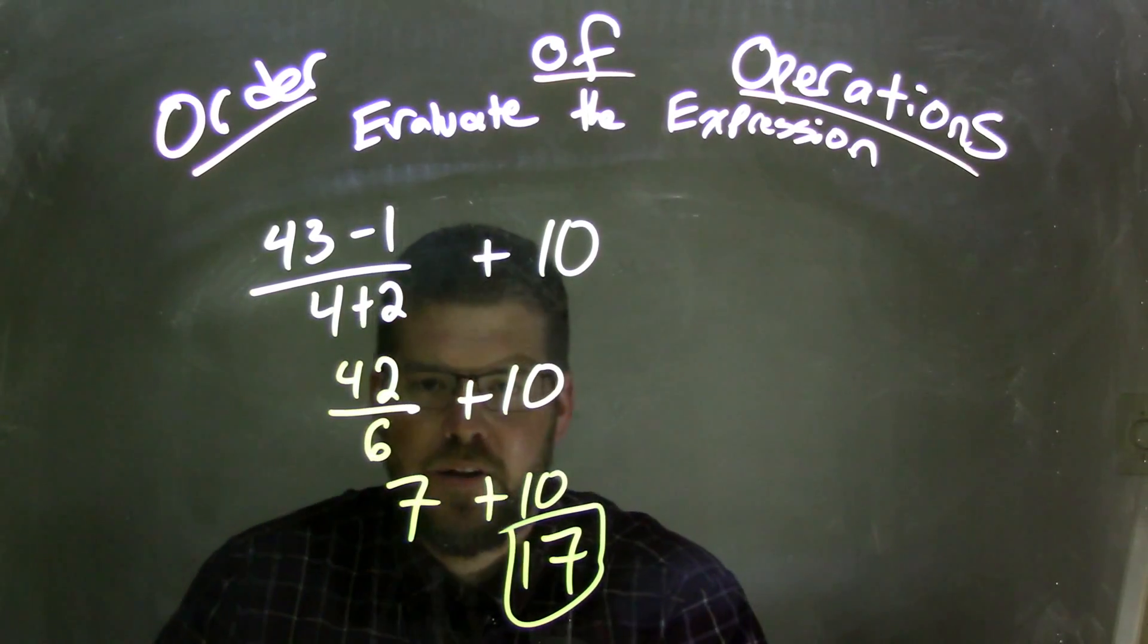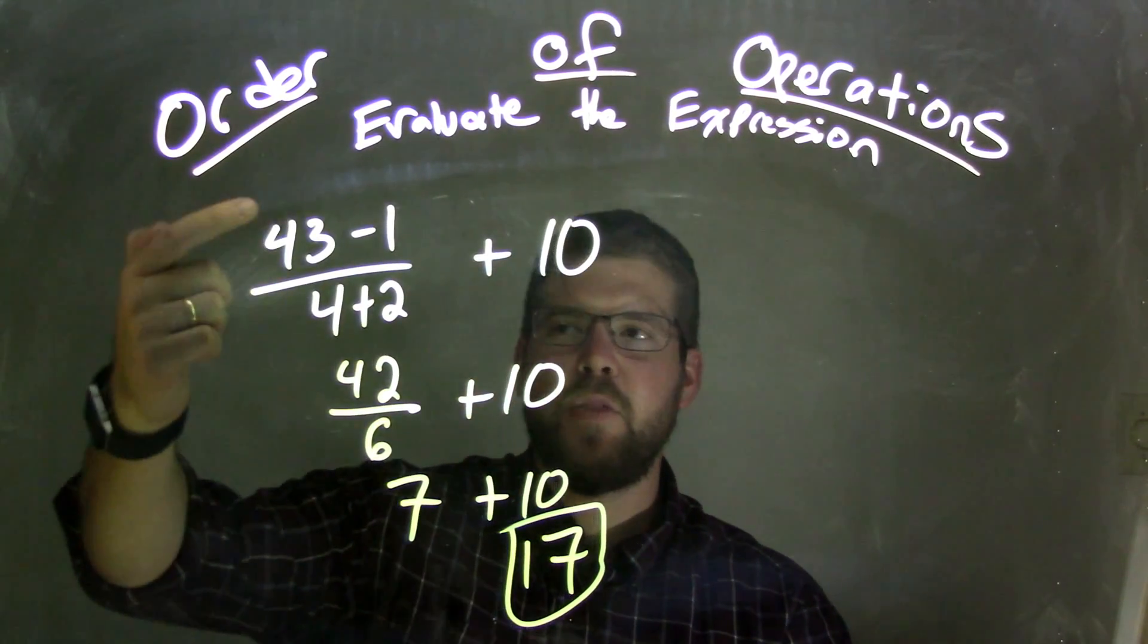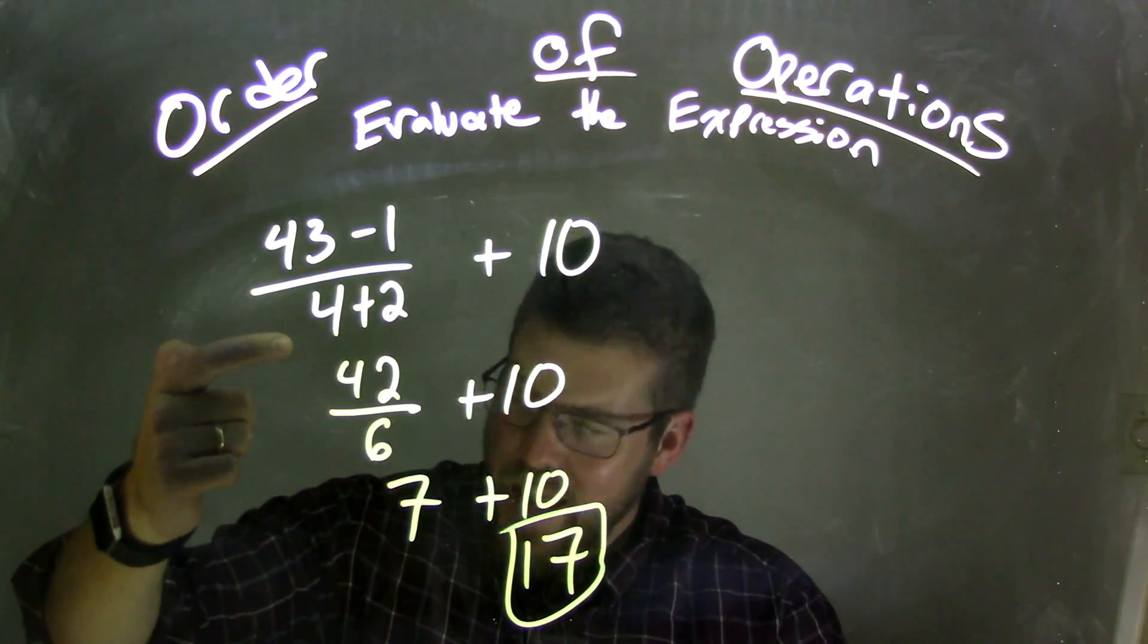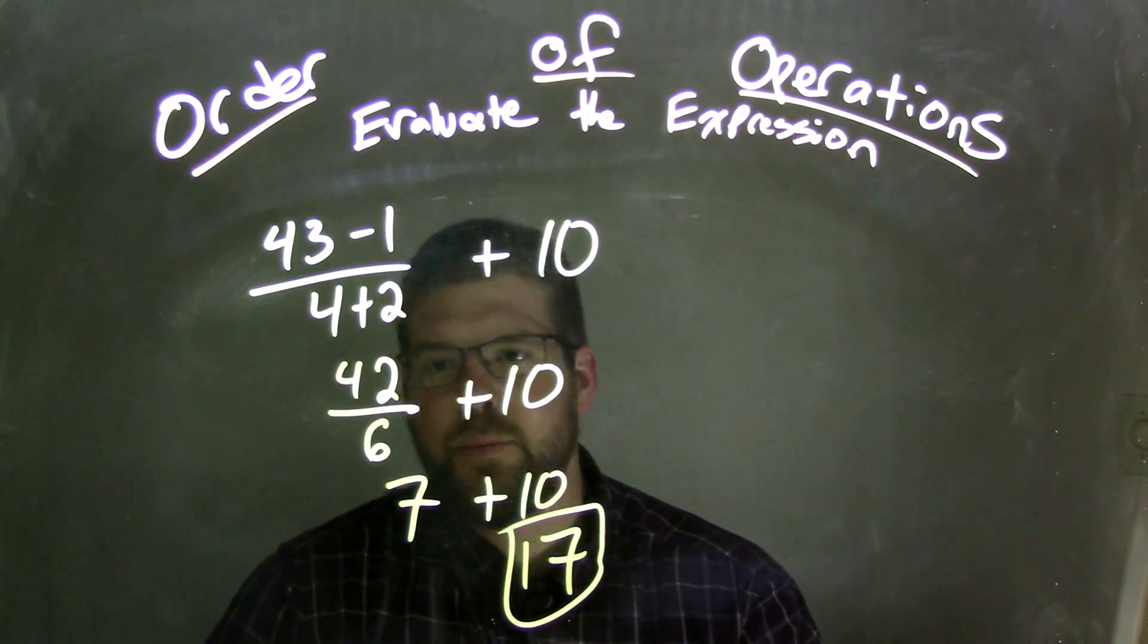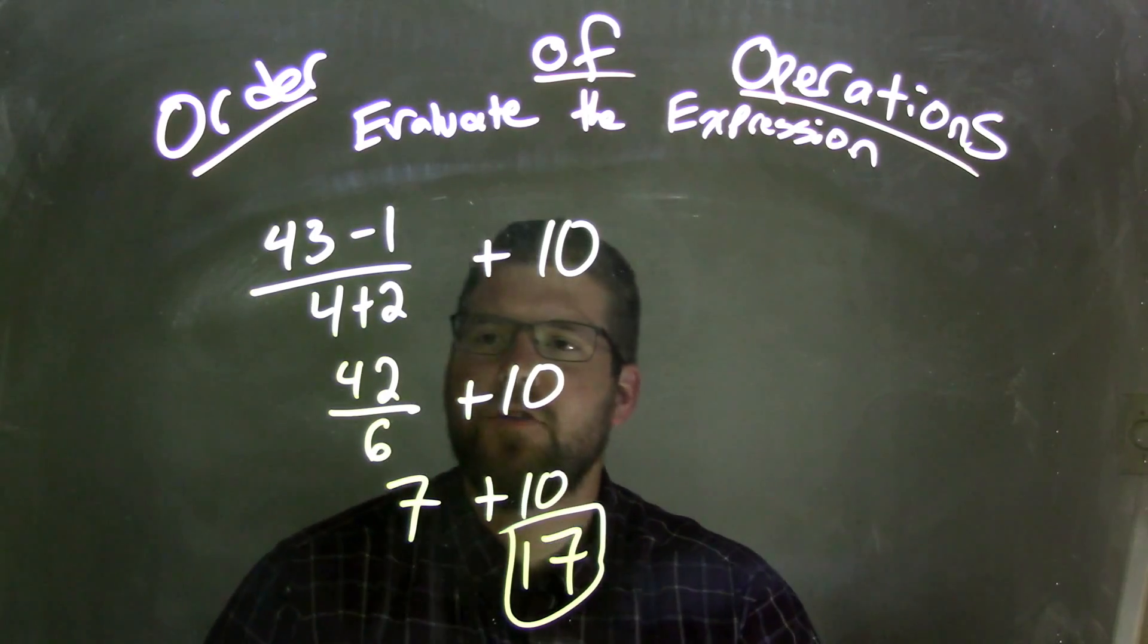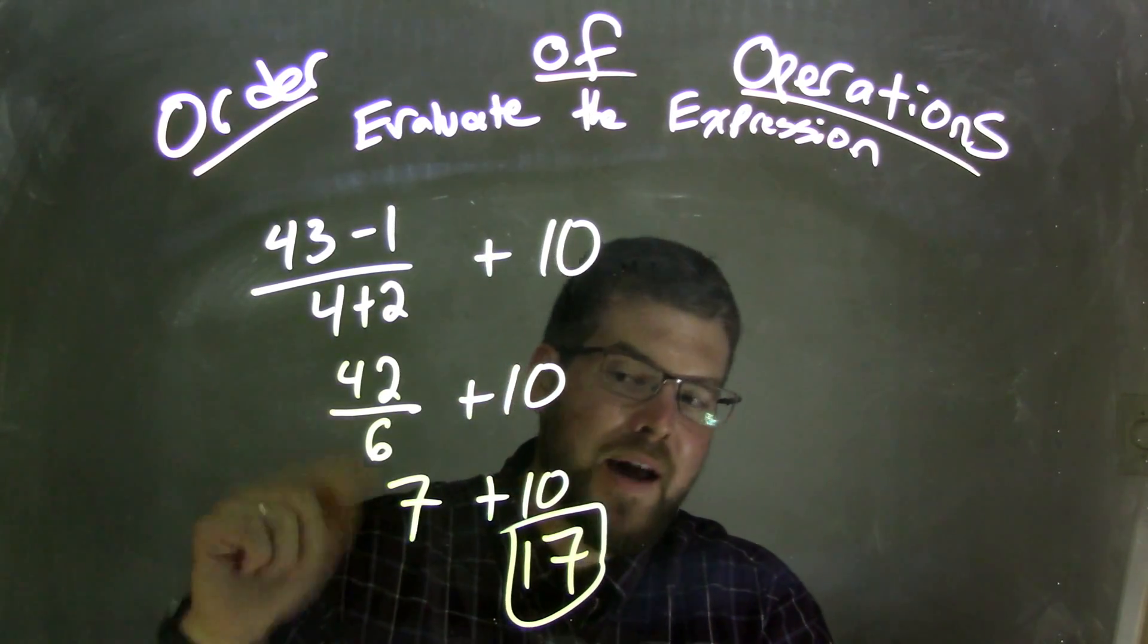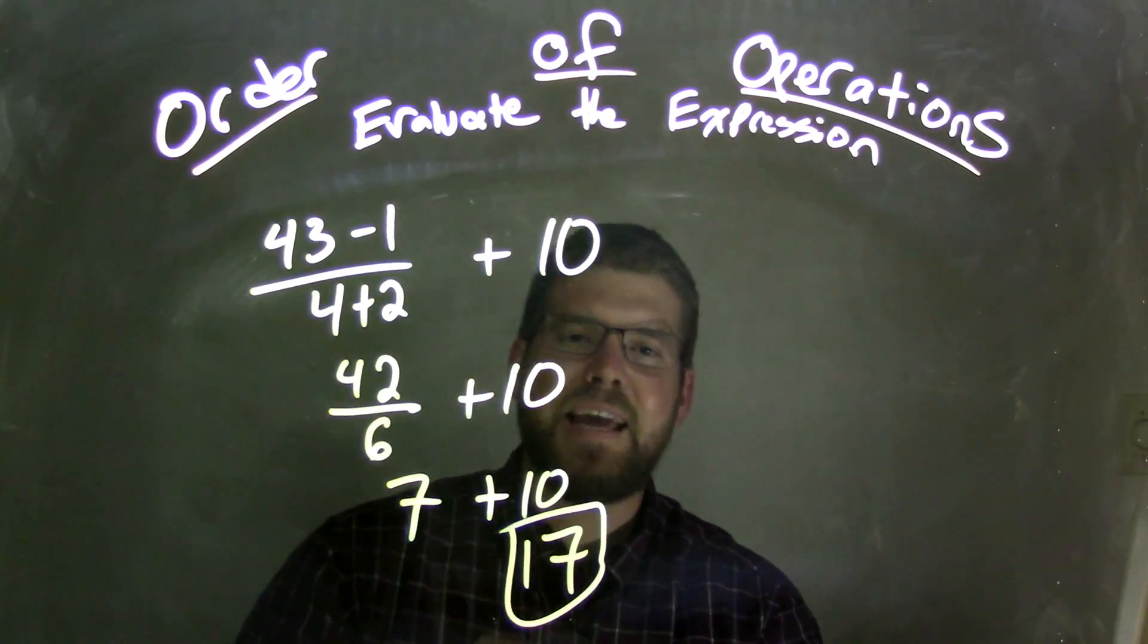And that is our final answer. So again, we had to deal with the numerator and the denominator of each part of the fraction there. Simplify each one individually to get 42 divided by 6. We then divided that to get 7, we add 10, and get 17.